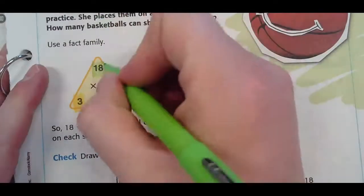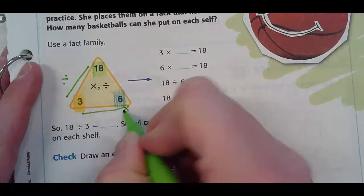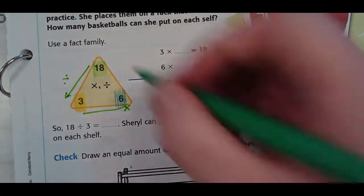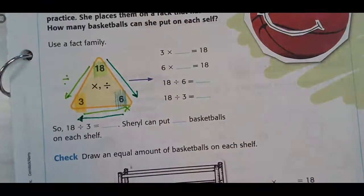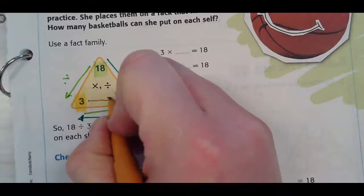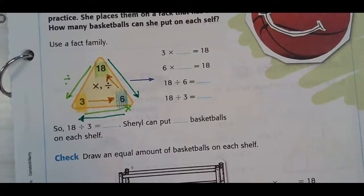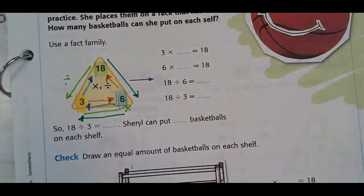Now, if I start with the 18 and I divide it by 3, my answer is going to be 6. If I start with the 18 and then divide it by 6, my answer is going to be 3. If I start with the 3 and I multiply it by 6, my answer is going to be 18. So, 3 times what is 18? 3 times 6 is 18.